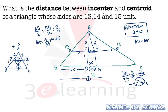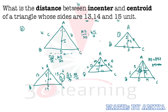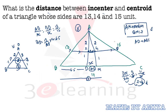So we used three to four concepts to solve this question, which is quite conceptual. The answer of this question is 1/3. I hope this has created a strong understanding of how we use different geometry concepts together. Now we are going to discuss coordinate geometry — that is Method 2.